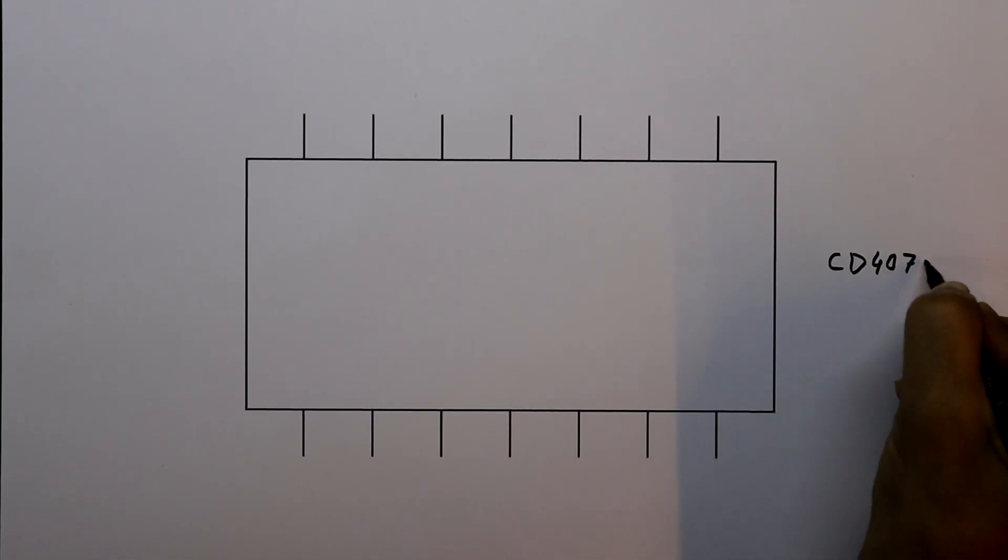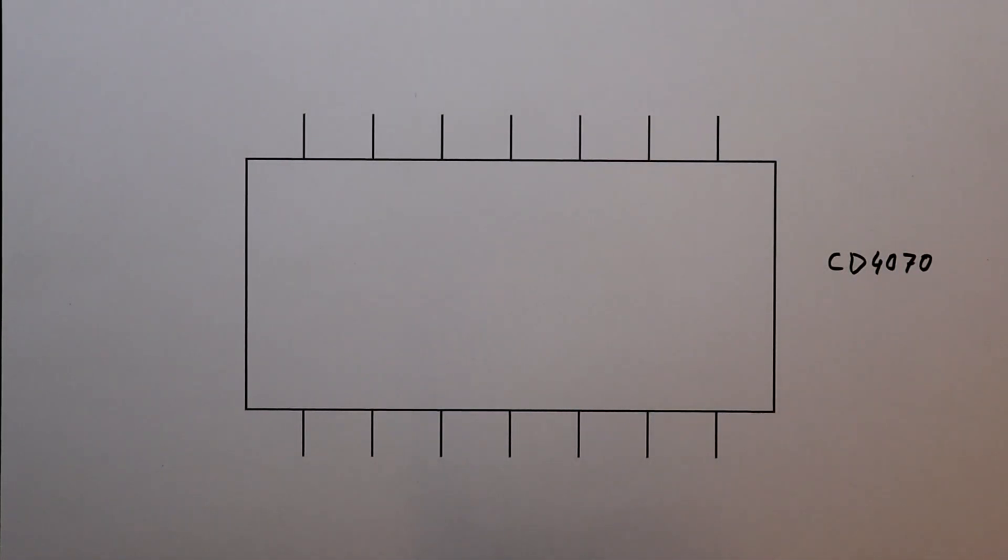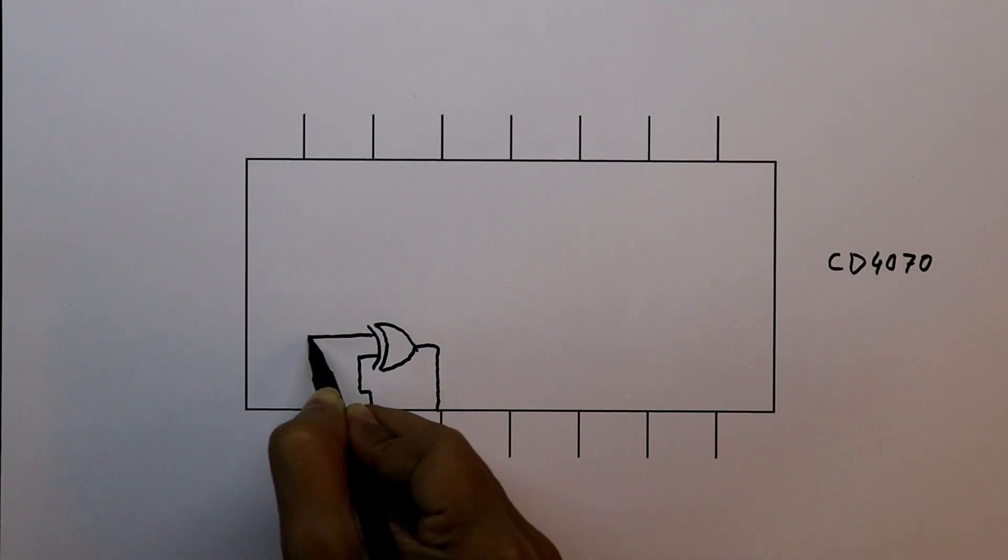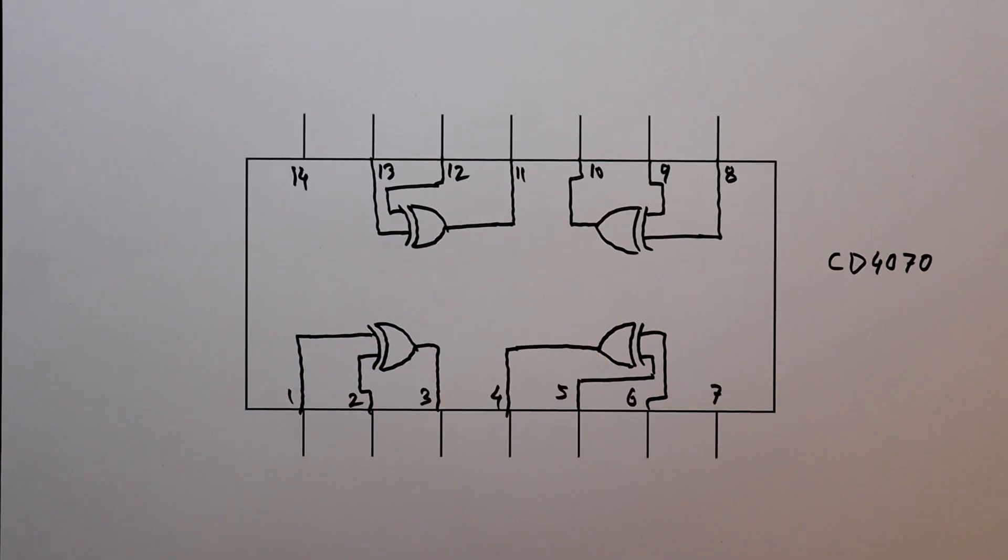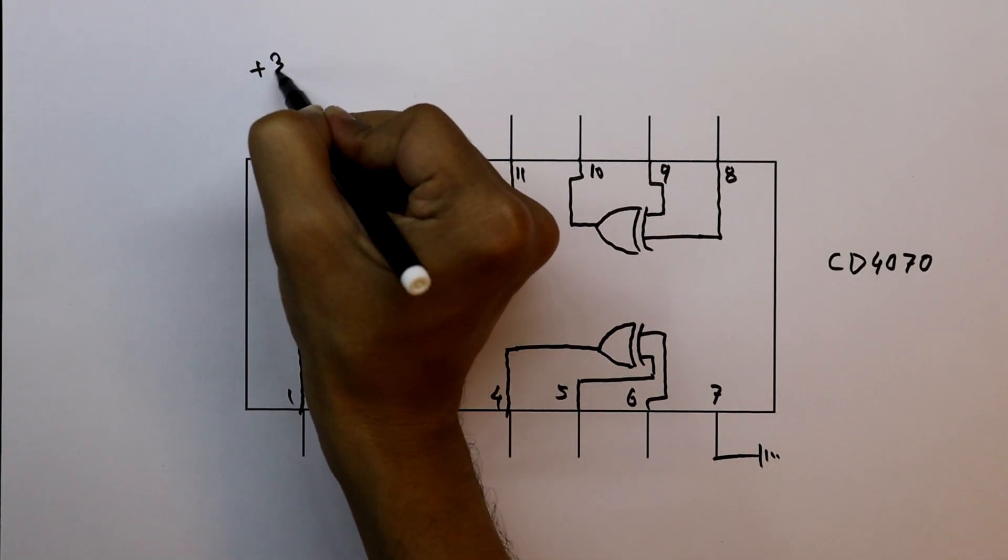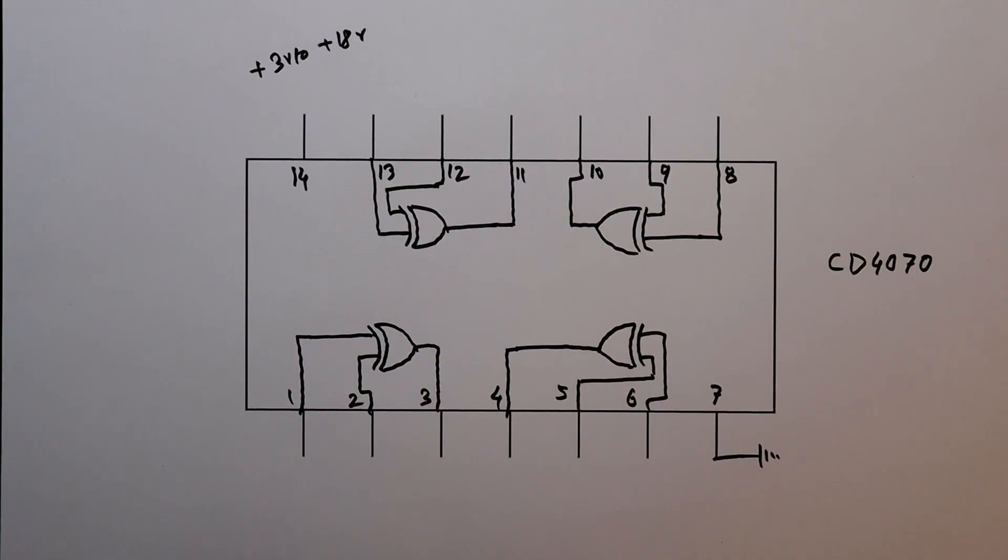CD4070 is an XOR IC. It has four XOR gates: XOR 1, 2, 3, and 4. These are the four XOR gates. Pin number 7 is ground. Pin number 14 is positive supply. We can supply from plus 3V to 18V.